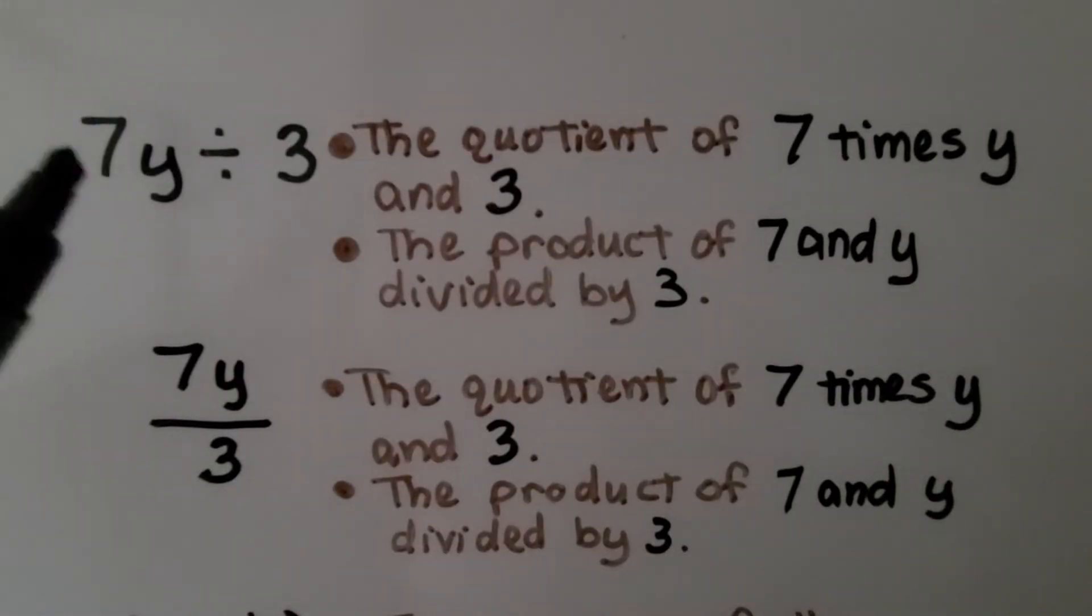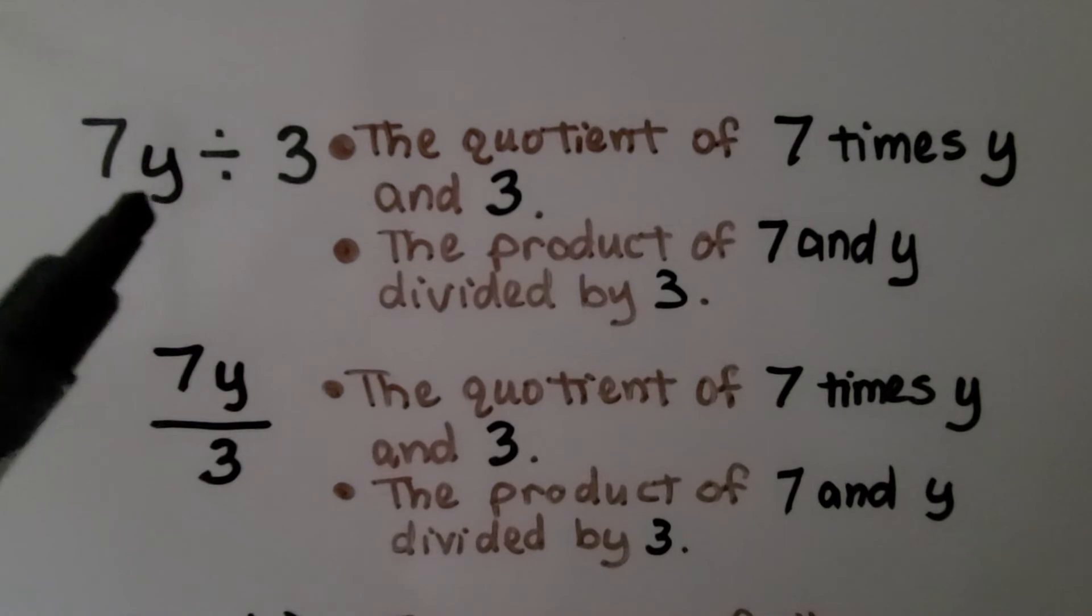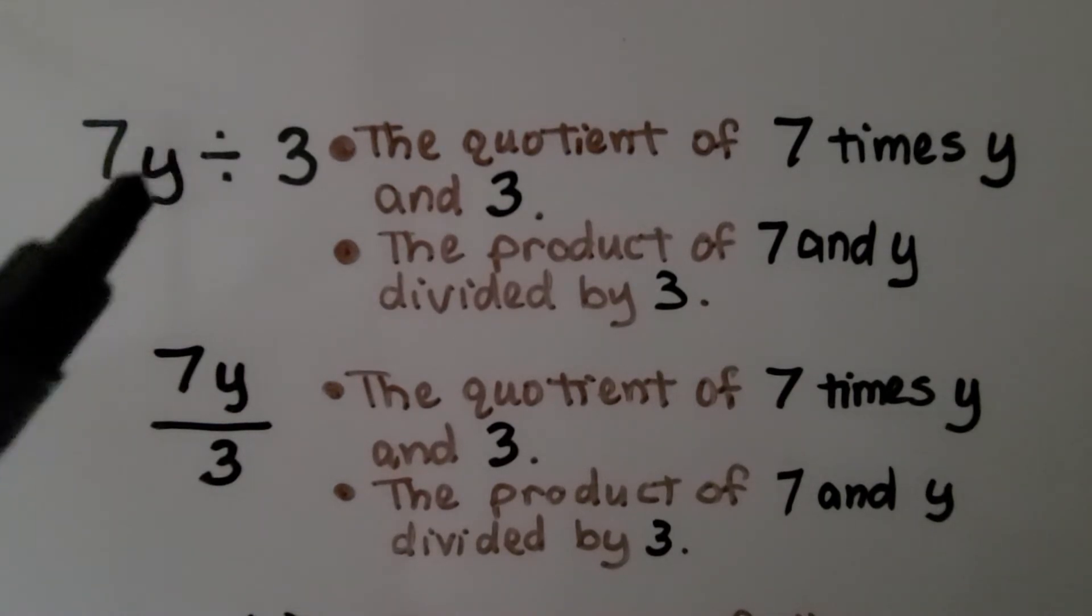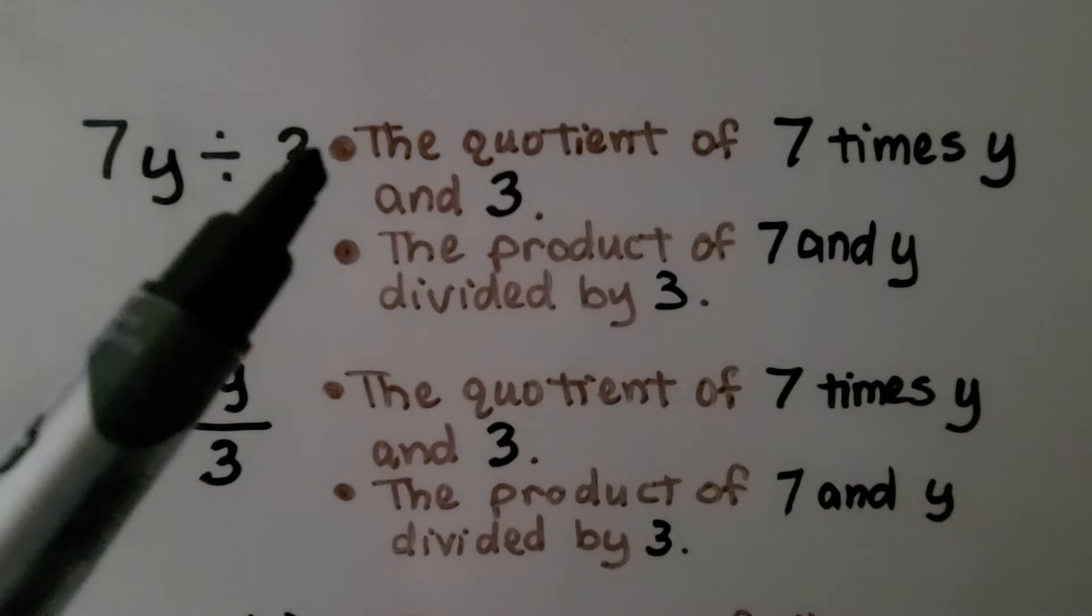Here we have 7y divided by 3. We can describe this as the quotient of 7 times y and 3.